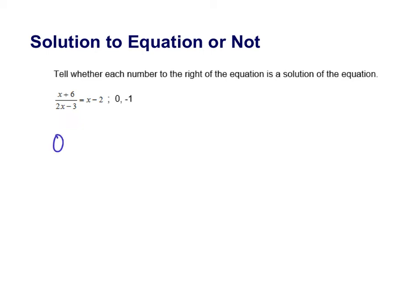So let's plug in the 0 first. So I'm going to plug in a 0 for every x in the equation. 0 plus 6 over 2 times 0 minus 3, does that equal 0 minus 2? So when we simplify this, 0 plus 6 is 6 over, now 2 times 0 is 0, and then 0 minus 3 is a negative 3.